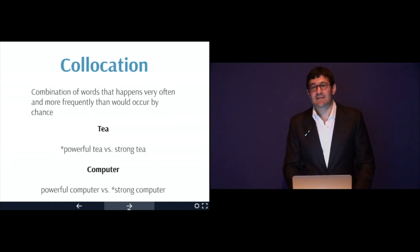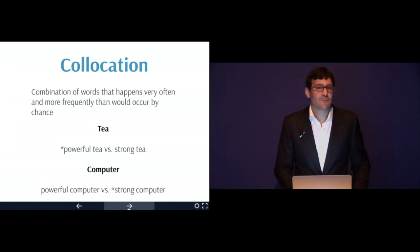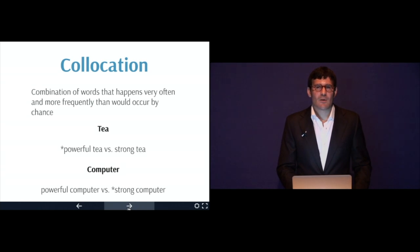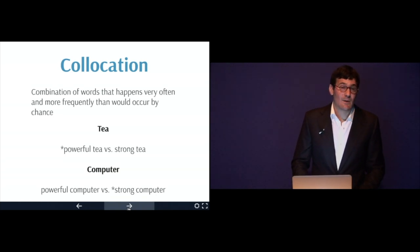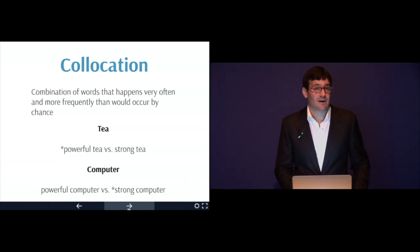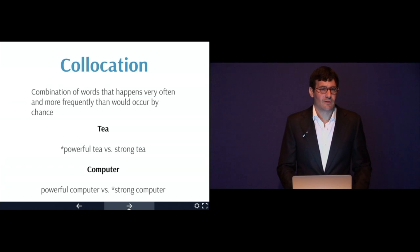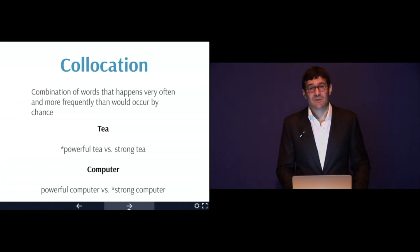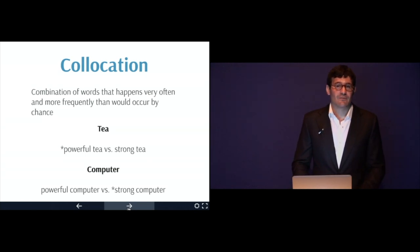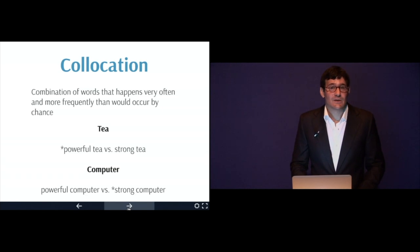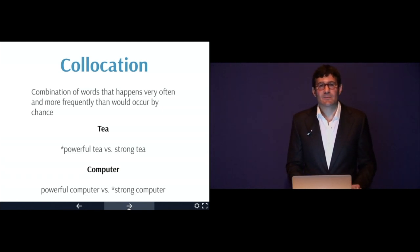The next thing is collocation. Collocation is a combination of words that happens very often and more frequently than would occur by chance. Let's take a look at two nouns: tea and computer. Essentially, powerful and strong both express the same sentiment, but we would not say a powerful tea. We say strong tea — not weak tea. Whereas with a computer, we don't use strong computer; we use powerful computer. There's no reason why we use strong with tea and powerful with computer — these are just things that we do. They're called collocations, and they need to be memorized or learned.